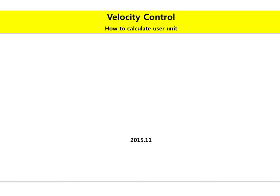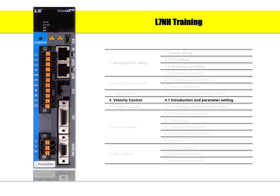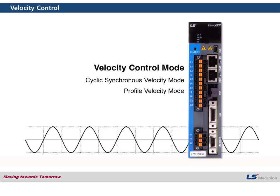The title of today is Velocity Control and the subtitle is How to Calculate User Unit for Velocity Mode. Velocity Control Mode has two kinds of modes: Cyclic Synchronous Velocity and Profile Velocity Mode.